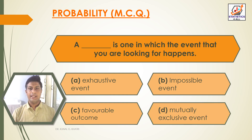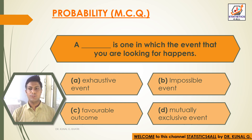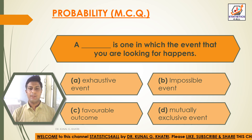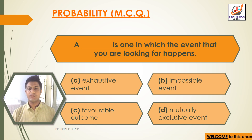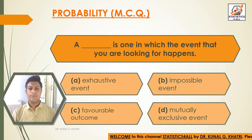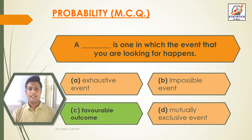Next question: a dash is one in which the event that you are looking for happens. Option A: objective event. Option B: impossible event. Option C: favorable outcome. Option D: mutually exclusive event. The answer is Option C — favorable outcome.